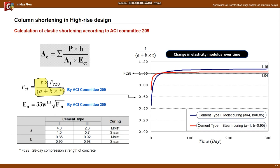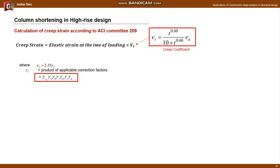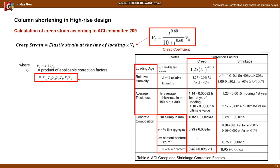Below is the creep strain calculation according to ACI 209. The creep strain can be calculated by multiplying the creep modulus by the elastic strain. The creep coefficient is calculated by multiplying the time function by the correction coefficient as shown in the equation. For correction, it is calculated by considering seven correction factors as shown in the table: loading time, relative humidity, volume surface area ratio, concrete slump value, aggregate ratio, cement content, and air content.